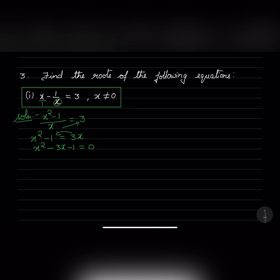For this we can split the middle term or use the formula. I will use the formula: x equals minus b plus or minus square root of b squared minus 4ac divided by 2a. Here a equals 1, b equals minus 3, c equals minus 1. Substituting: x equals minus of minus 3 plus or minus square root of minus 3 whole square minus 4 into 1 into minus 1, divided by 2 into 1.